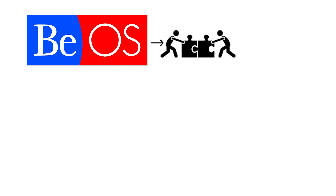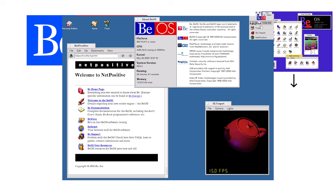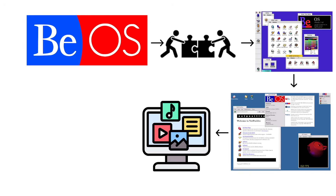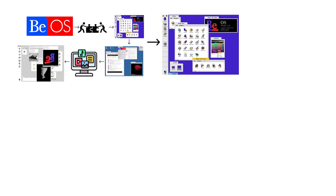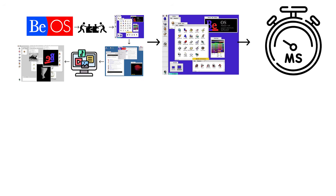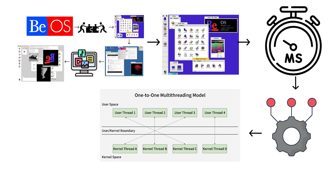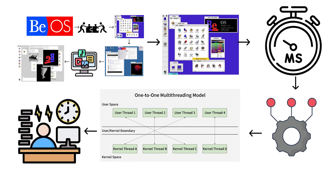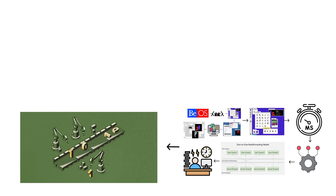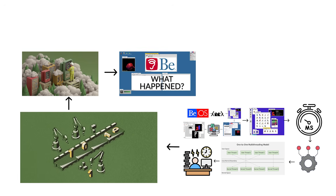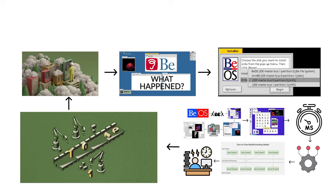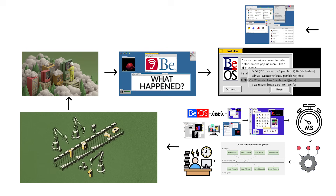BeOS was created by Be Incorporated as a clean, modern operating system designed specifically for multimedia — long before multimedia meant streaming five different videos while your browser eats three gigabytes of RAM. The system focused on high responsiveness, low latency, and efficient multi-threading, meaning it could split tasks into many parallel threads and keep everything smooth even under heavy workloads. BeOS achieved this by being built from scratch instead of inheriting decades of legacy code. Its file system, called the Be File System, supported extended attributes, allowing files to behave more like tiny databases instead of simple blobs of data.